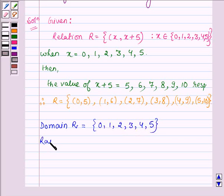And the range of R is the set of all the elements which are the second elements of these ordered pairs which are {5, 6, 7, 8, 9, 10}.